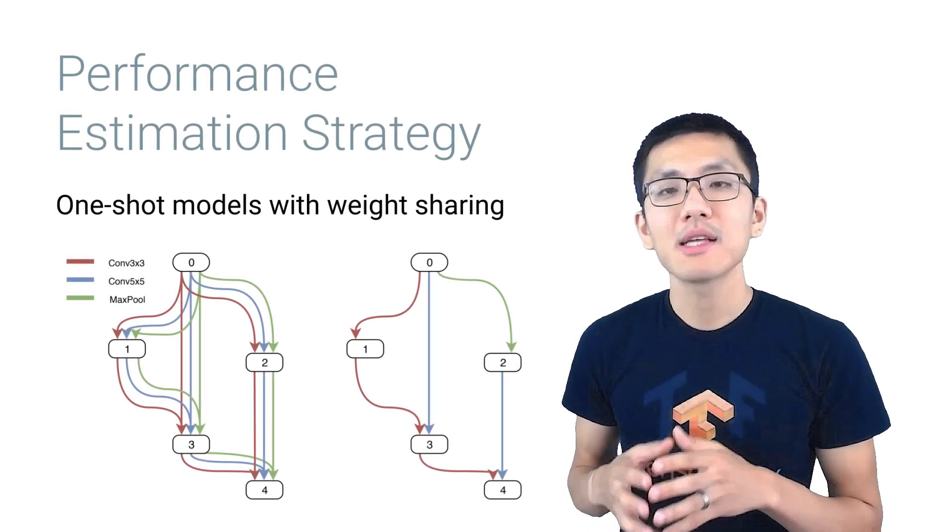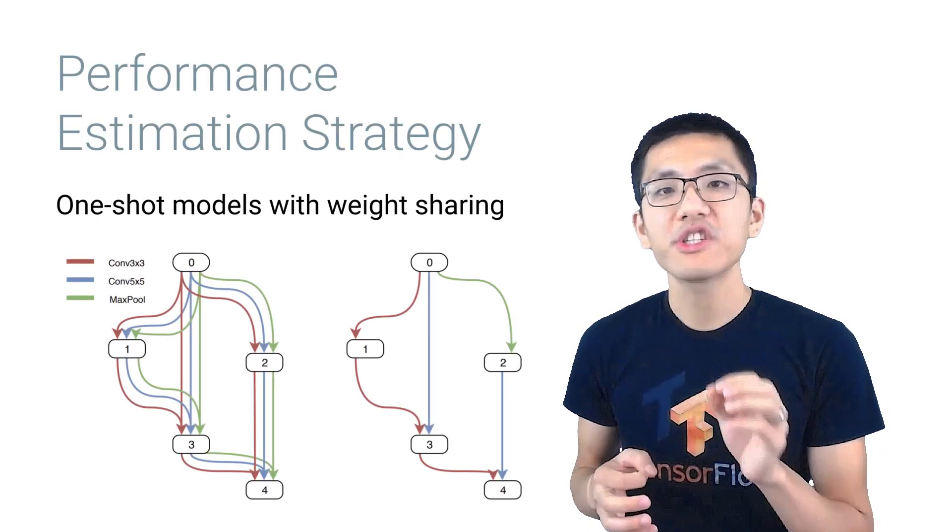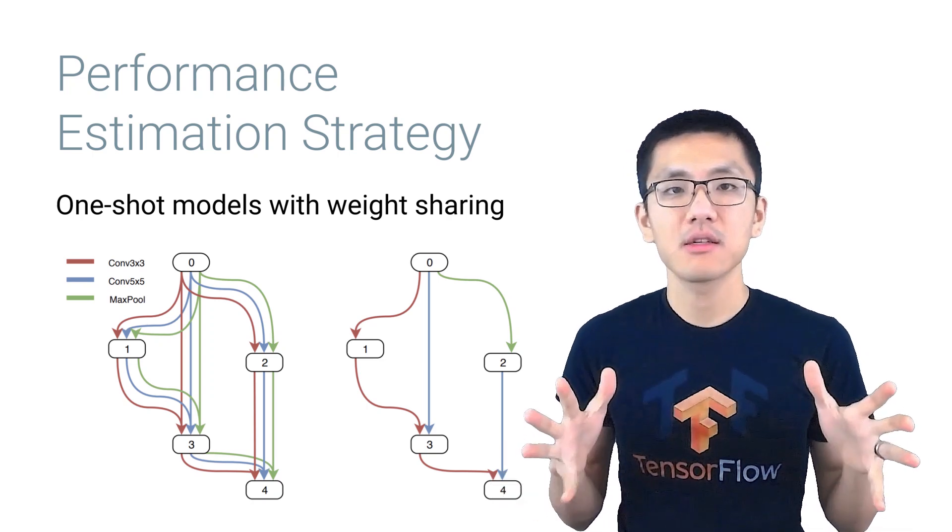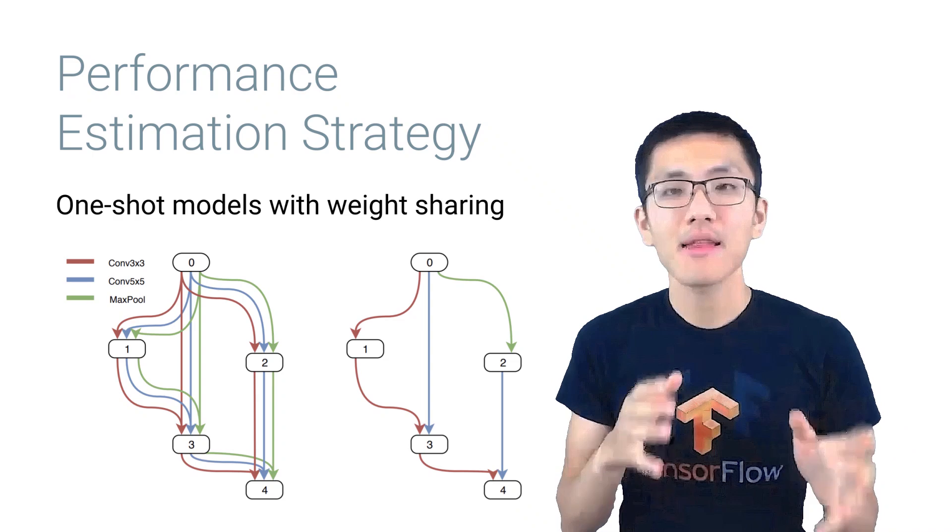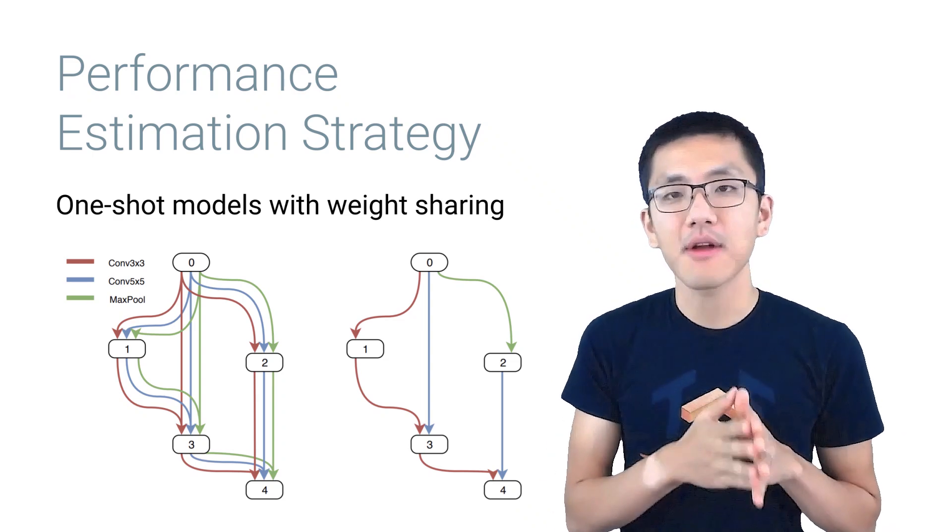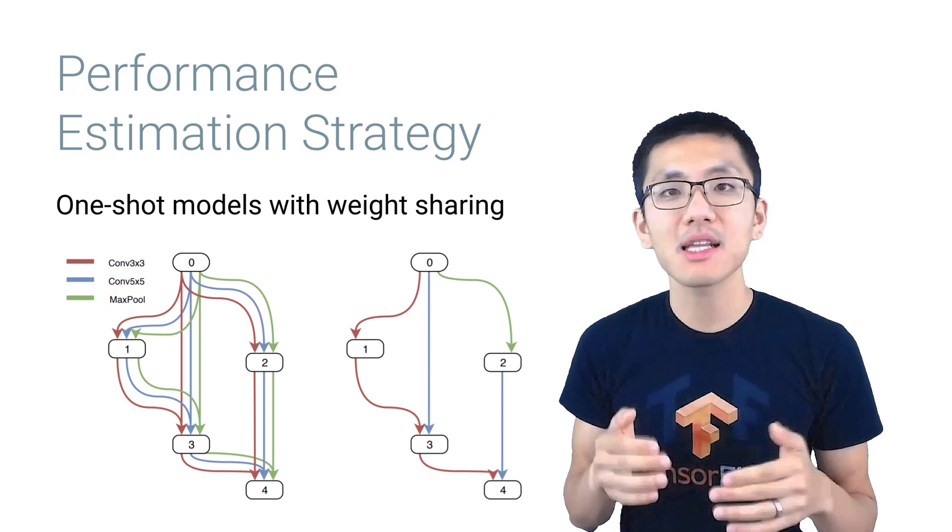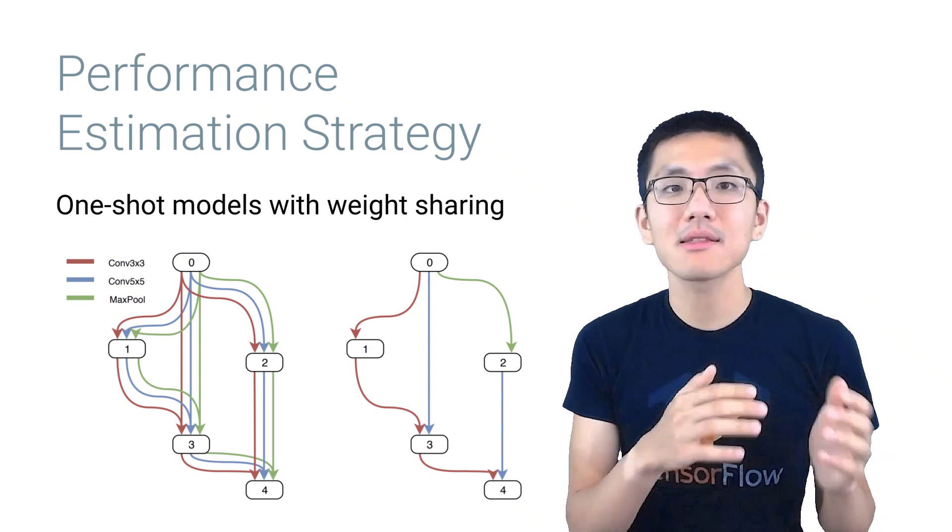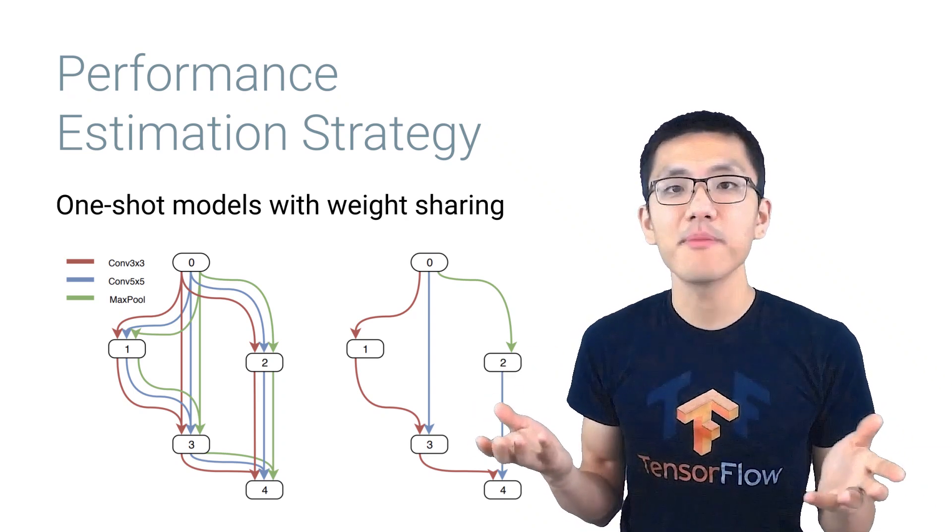A third performance estimation strategy is one-shot models with weight sharing. First, a super graph is trained on the entire dataset. And then sub graphs of that model inherit the weights from the super graph. So no further training is needed for these candidate models. They just need to be evaluated for performance against the test set. So it saves a ton of time.